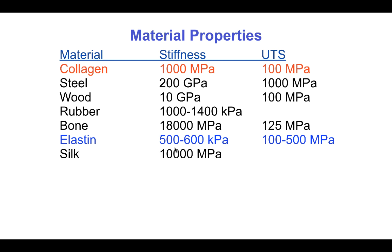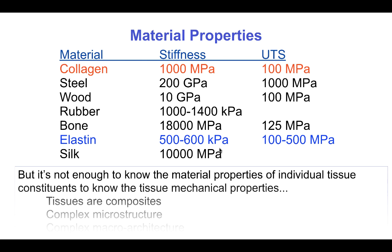Elastin, on the other hand, is very soft — less than 1 megapascal in stiffness — but because it can strain so much, its strength is actually quite high. The stiffness of silk is 10 gigapascals. However, it's not enough just to know the material properties of individual tissue constituents such as collagen and elastin to know the material properties of tissues, which are composites with complex microstructure and a complex macroarchitecture that dominates the material response.